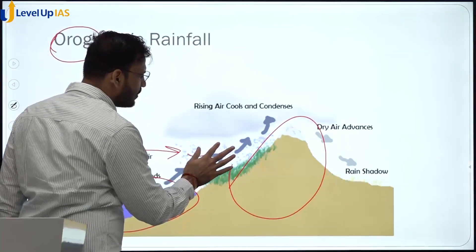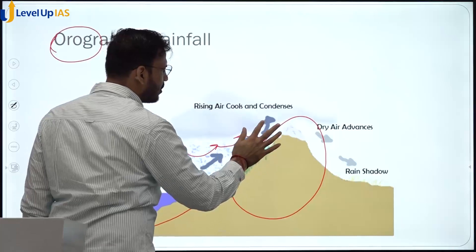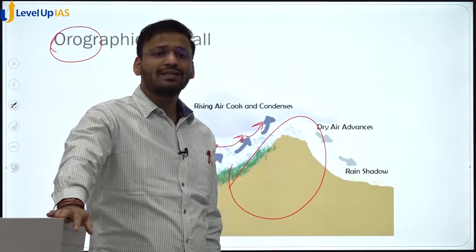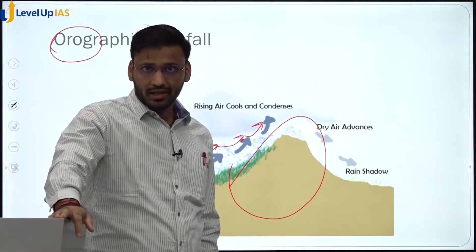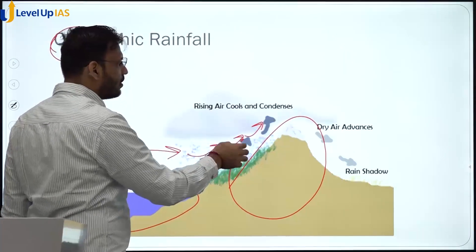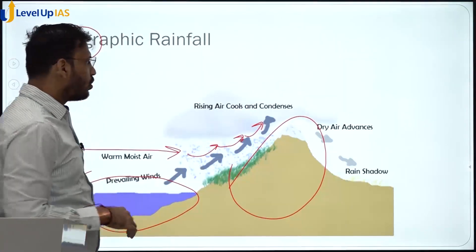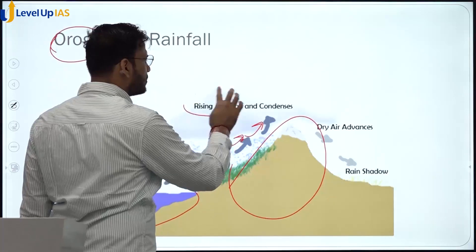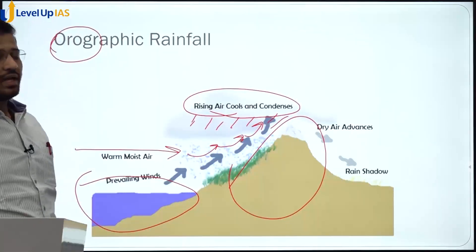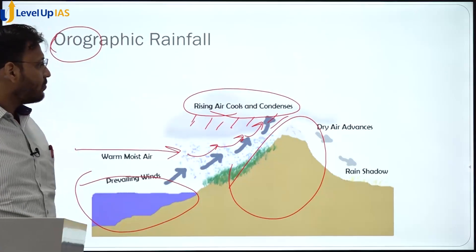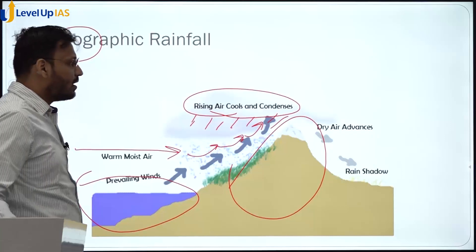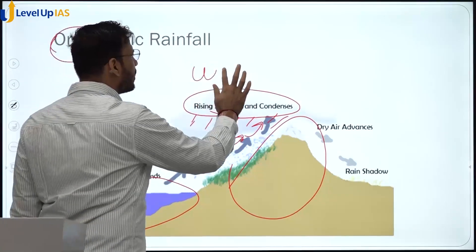Because of their energy, the winds start climbing the wall of the mountain. As they are moving upward, the process called adiabatic cooling happens. Because of this adiabatic cooling, condensation happens and they give rainfall on this side of the mountain. So these rising and cooling clouds are condensing and giving rainfall. This process happens because of adiabatic cooling, and this rainfall is called orographic rainfall. The side on which this rainfall is happening is called the windward side.